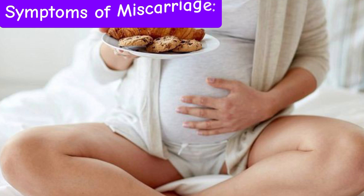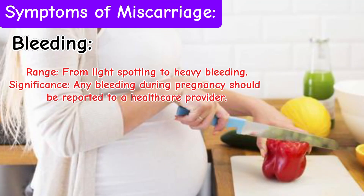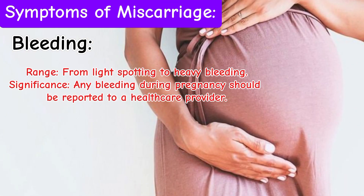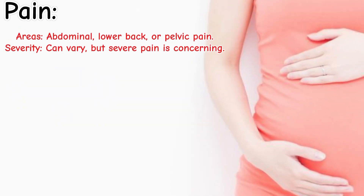Symptoms of Miscarriage: Bleeding can range from light spotting to heavy bleeding. Any bleeding during pregnancy should be reported to a healthcare provider. Cramping may be mild to severe, similar to menstrual cramps — persistent or severe cramping is a warning sign. Pain may occur in the abdomen, lower back, or pelvis, and severe pain is concerning.